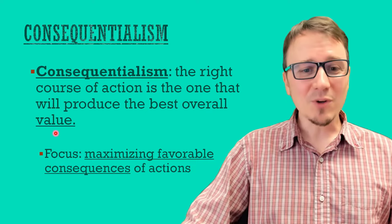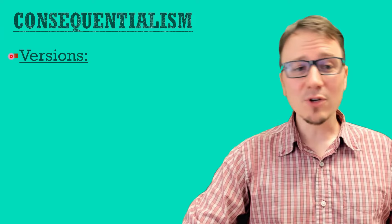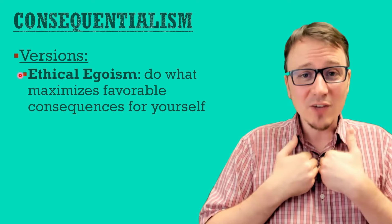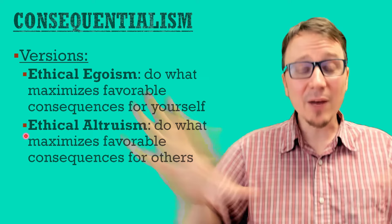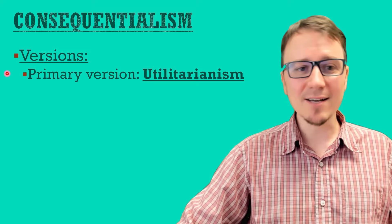Consequentialism has many different versions. One version is ethical egoism: do what maximizes favorable consequences to yourself — that's what determines what you should do in the world. The flip side of that is ethical altruism: do what maximizes favorable consequences for others, without considering your own interest. The most common version of consequentialism, however, is utilitarianism.